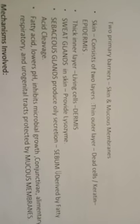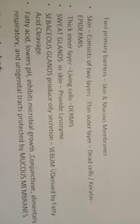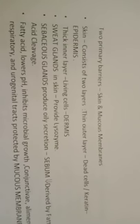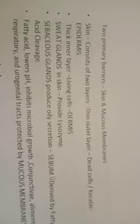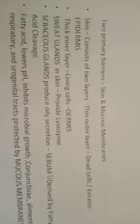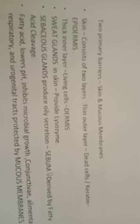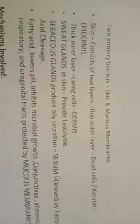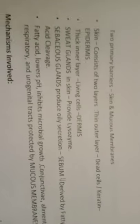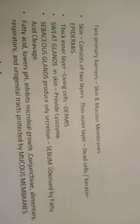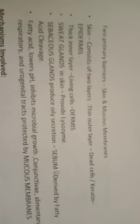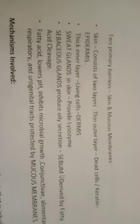The physical barrier includes the skin and the mucous membrane. The skin has two layers: a thin outer layer called the keratin epidermis and a thicker inner layer of living cells. The skin is the primary barrier. Sweat glands and lysosomes are also protective. The sebaceous gland produces oil secretion, which is a primary barrier against microorganisms.